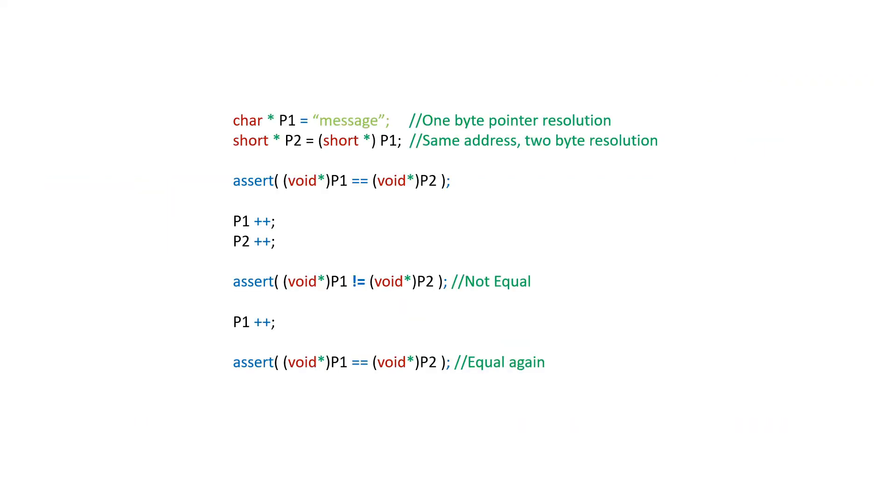Let's look at a quick code example that demonstrates this principle. A char pointer is a 1-byte resolution pointer. A short pointer is a 2-byte resolution pointer.